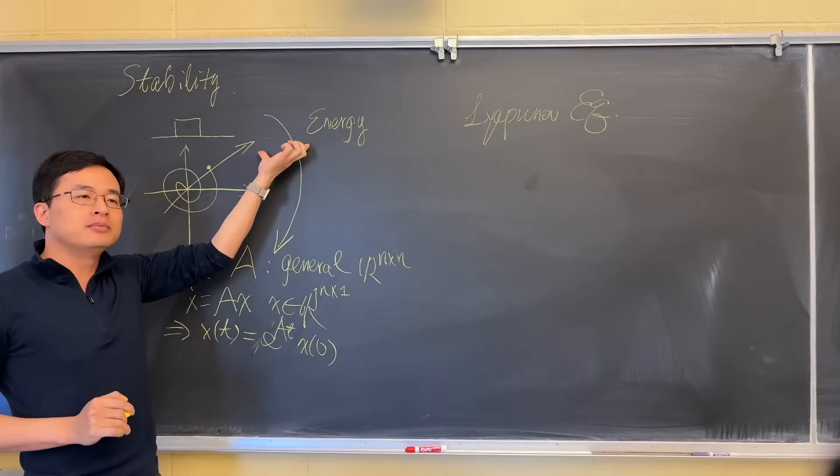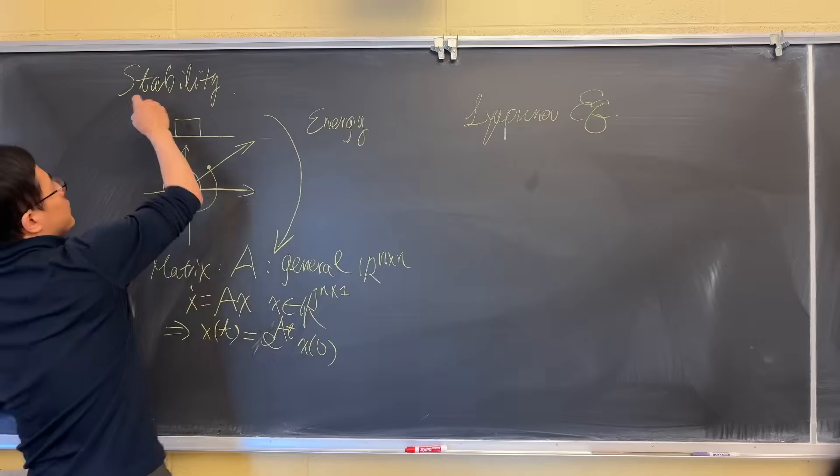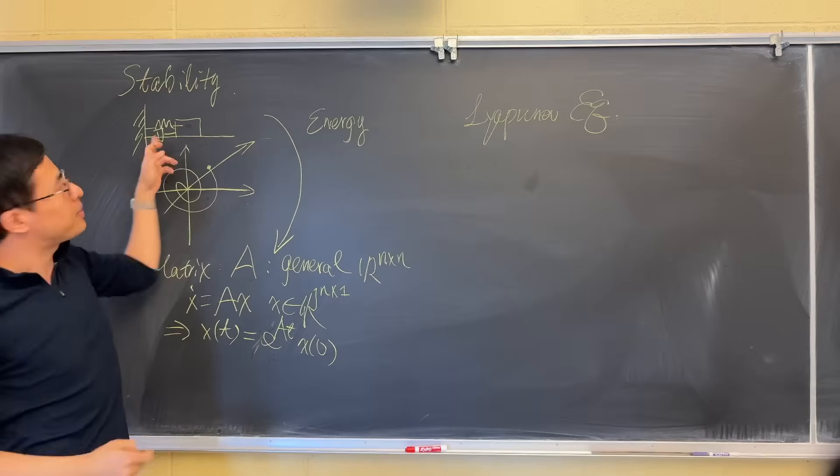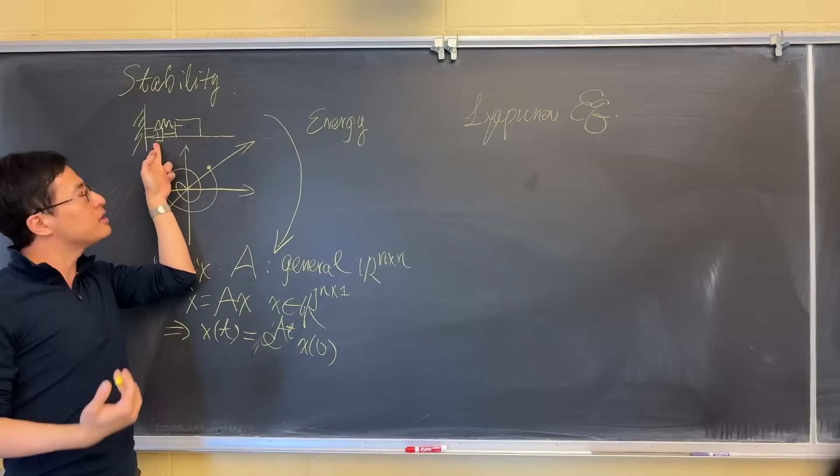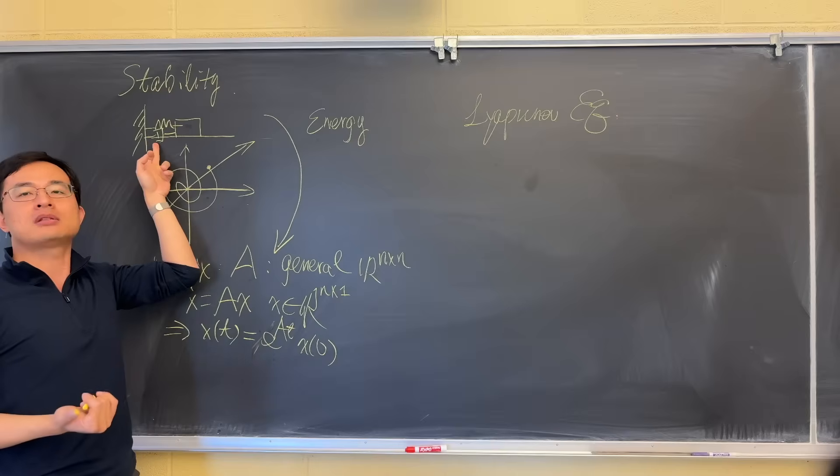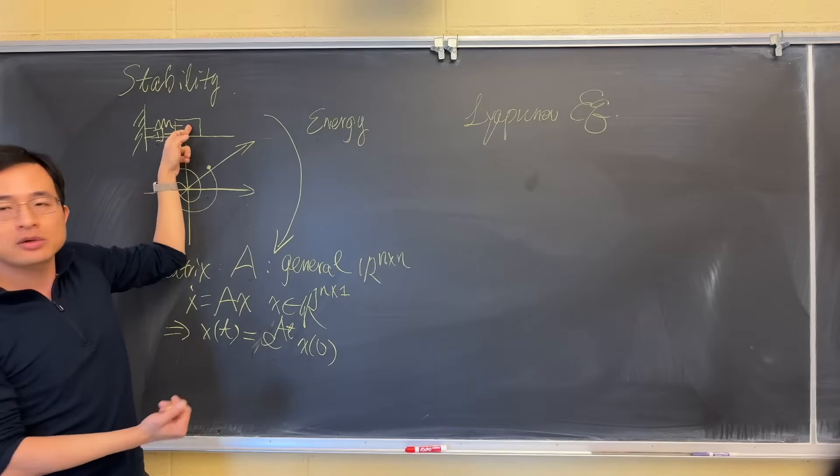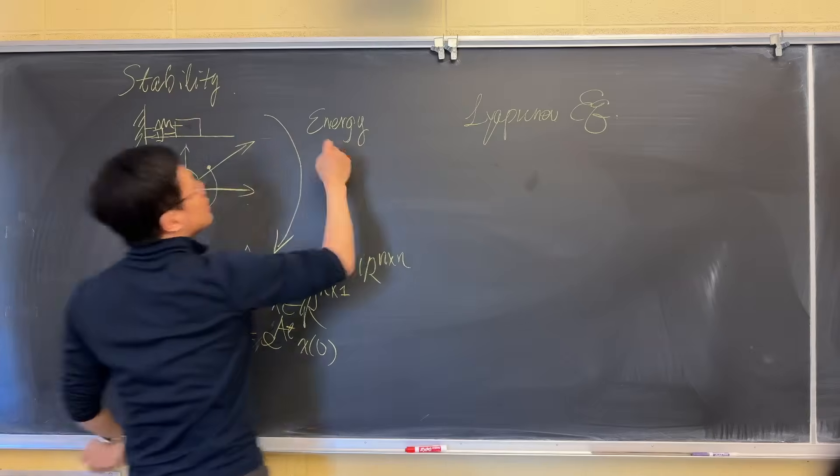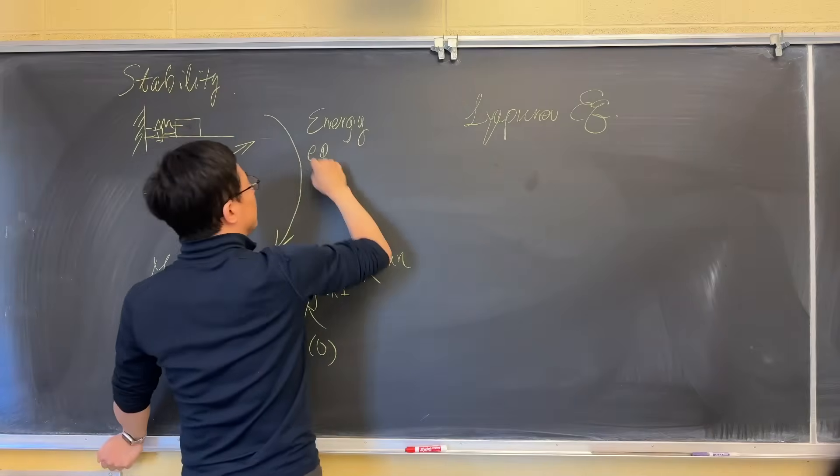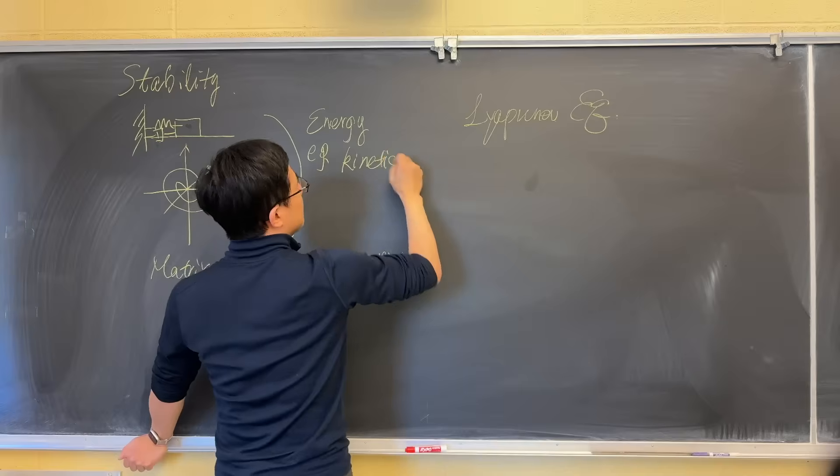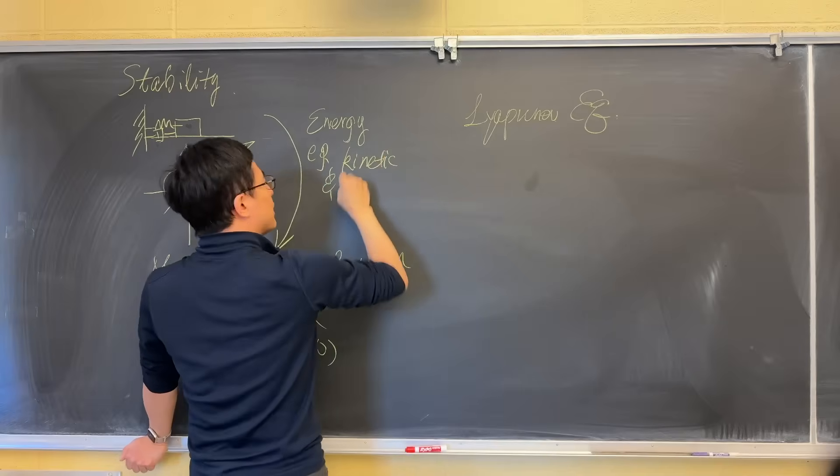What we're going to do today is to make this connection between this physical scenario to this equation using this concept of energy and the Lyapunov equation. Let's get started first from the energy viewpoint. We can even make this a little bit more complicated. We can have a spring attached to it, we can have a damper attached to it. We know how the energy of this point mass can be described. It contains kinetic energy and potential energy.